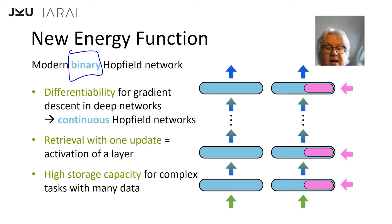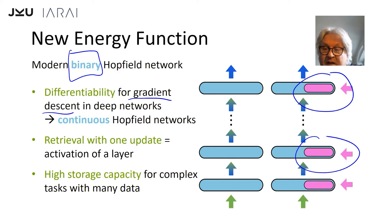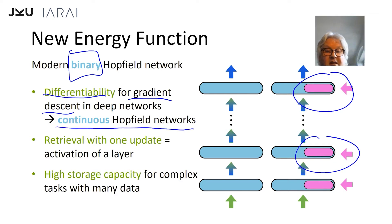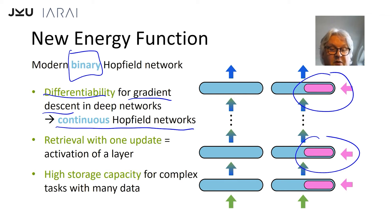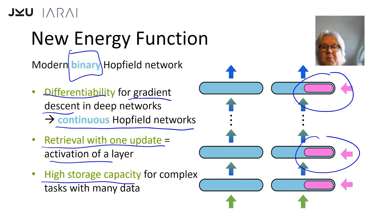As our goal was to integrate the modern Hopfield network into deep learning architectures and learn by gradient descent, we have to ensure that these networks are differentiable. To apply gradient descent we need continuous Hopfield networks, not binary. We have to generalize the binary modern Hopfield networks to continuous Hopfield networks. We still want to keep retrieval after one update — because that means we can just activate a layer, where retrieval equals activation — and we also want to keep the high storage capacity.